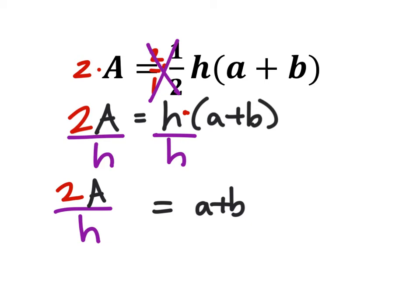And hopefully from this we can see that to get the a by itself we now need to subtract the b from both sides. So now I show that and of course a positive b minus b gives us a total value of zero.